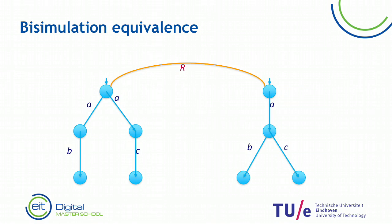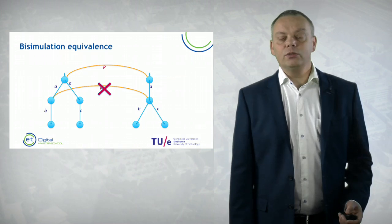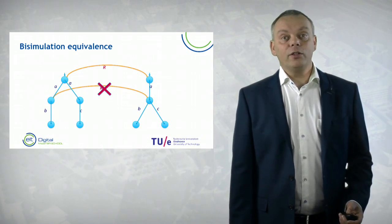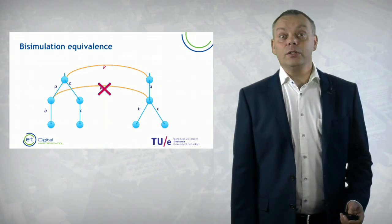What is extremely useful is to look at the non-deterministic side, at the left side, and do an A step to the state with the outgoing B. Then we try to mimic that with the A step at the right. If the initial states are related, then these two states should also be related. But if these two states are related, then we can do a C step at the right, which we cannot mimic at the state on the left. So these two states cannot be related.